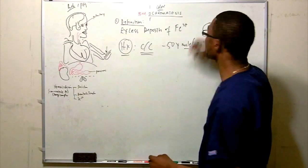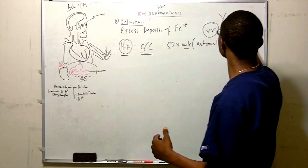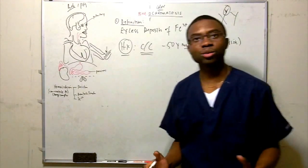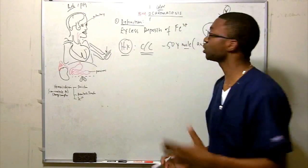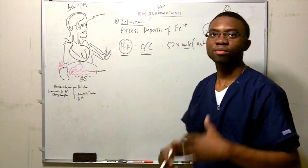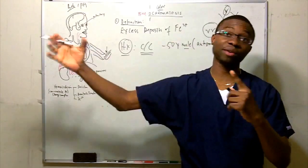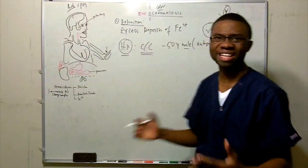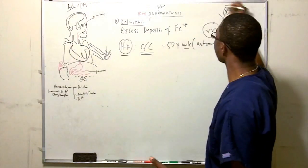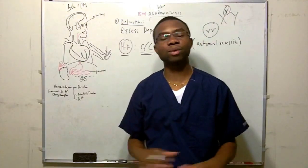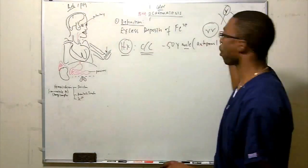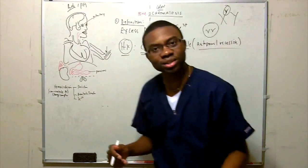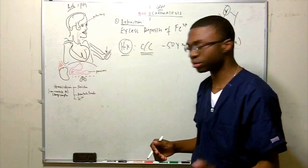Why is he male? Because this is an autosomal recessive disease. It's autosomal recessive, which means only males are guaranteed to get it — because once they get one copy of this gene, they're affected. Females can get it too, but males are definitely more likely to manifest the disease because once they pick up that gene, it's over.